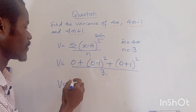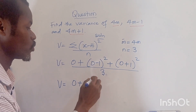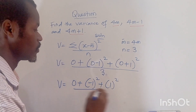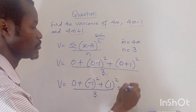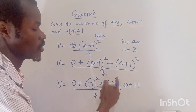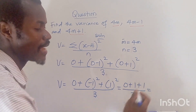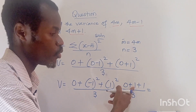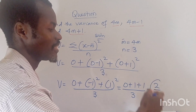So we have: 0 plus (minus 1) squared plus (1) squared, divided by 3. That gives us 0 plus 1 plus 1, divided by 3. Adding the numerator: 0 plus 1 plus 1 equals 2, so we get 2 over 3.